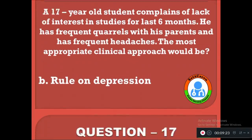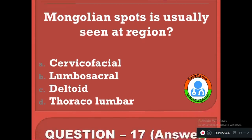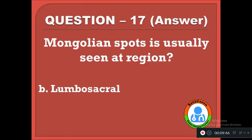Question 17: Mongolian spots are usually seen at which region? Option A: cervicofacial, B: lumbosacral, C: deltoid, D: thoracolumbar. The correct answer is B, lumbosacral region. These are bluish patches seen over the lumbosacral area in children.